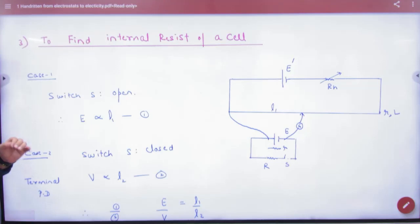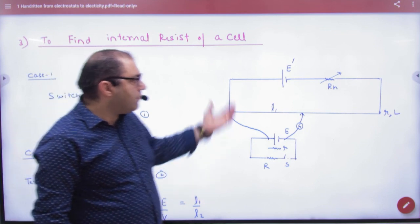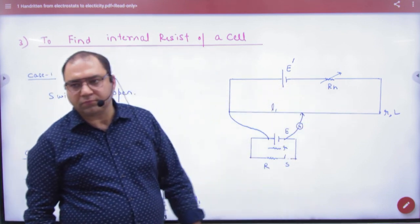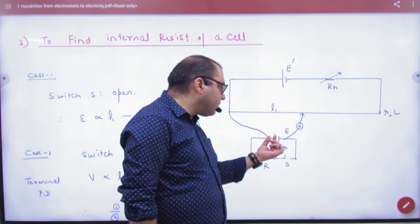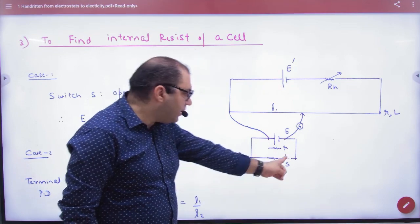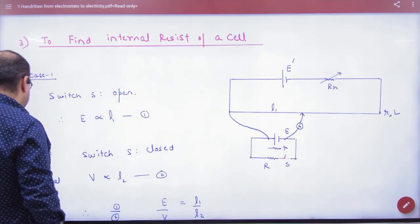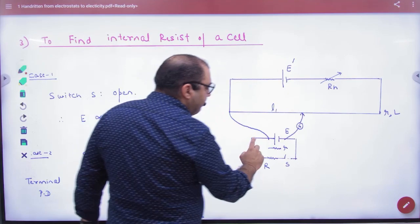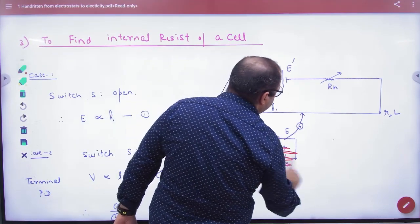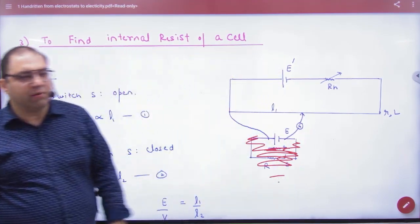To find internal resistance of a cell. Think that this is a potentiometer, you have given a cell down. You have not turned on this switch. When you have not turned it on, there is no need to show anything. It is only the cell connected.